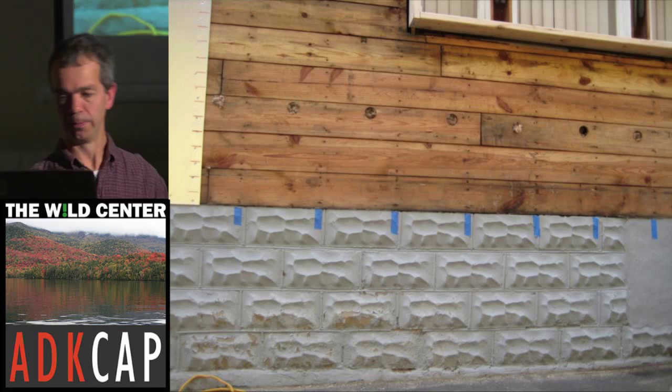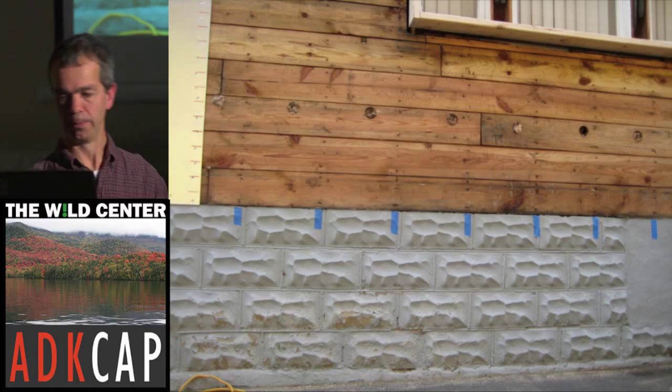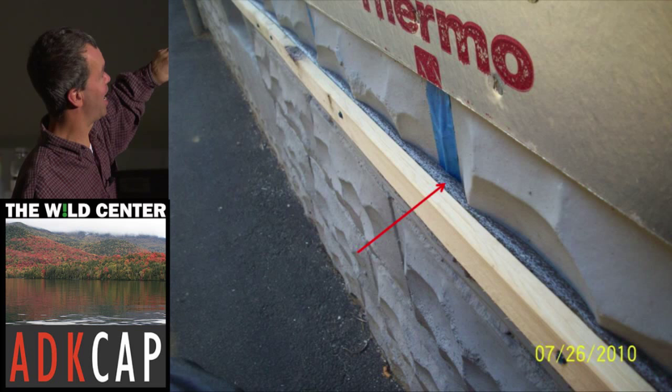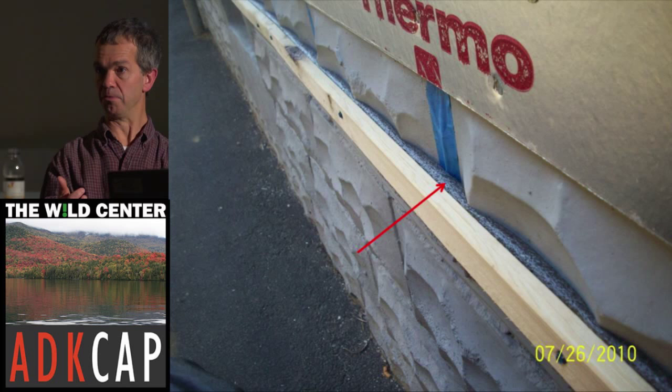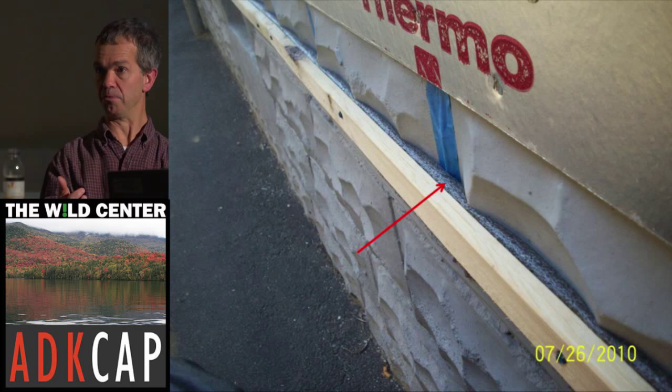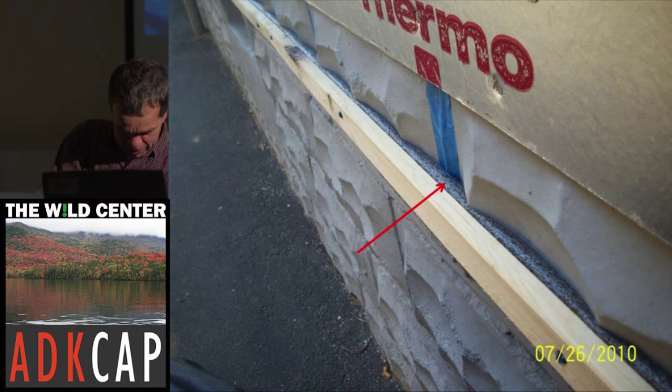That backer rod picture's coming up — there it is. Basically it's a squishy foam material, and we built a ledger off of that. That's mainly our structure — we're looking to marry to the exterior of the house and put an overcoat on it. The house was like this and we took it out further because we're going all the way to the basement. That backer rod allowed for that transition.